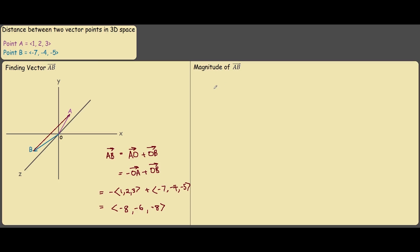For our second step to find the magnitude of AB, we do this by taking the square root and squaring each coordinate, so for negative 8 we square it plus negative 6 squared plus negative 8 squared.